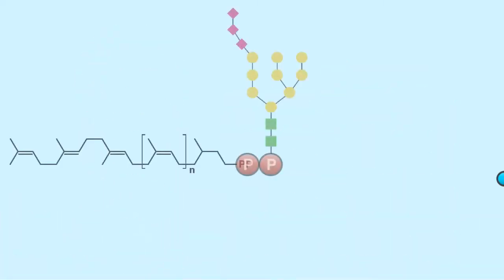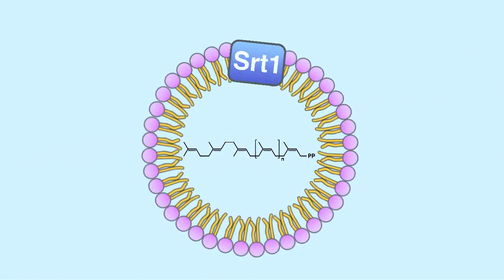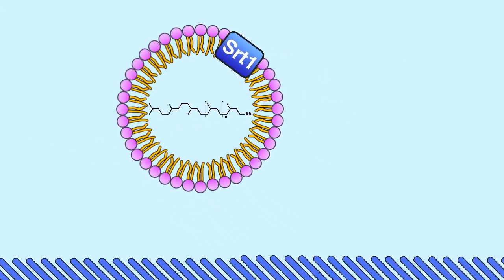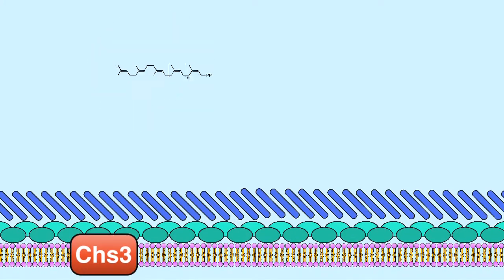These results suggest that polyprenols may do more than simply facilitate the glycosylation of proteins. Here, polyprenols generated by SRT1 upregulate the activity of a protein involved in cell wall synthesis.